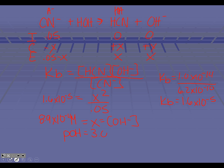Subtract that from 14, and at our equivalence point our pH is 10.95, which is well above 7 because this is a weak acid, strong base titration — we go with the strong component for our pH at the equivalence point.